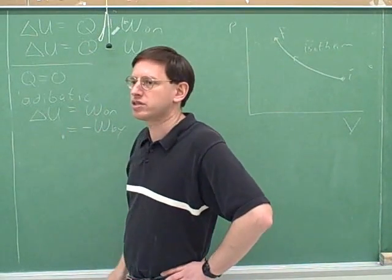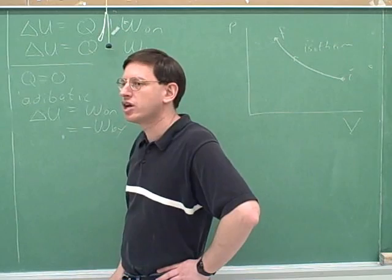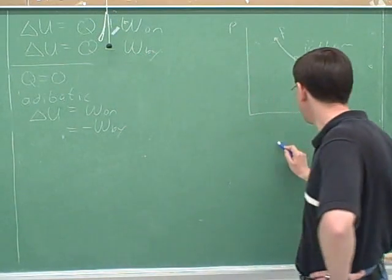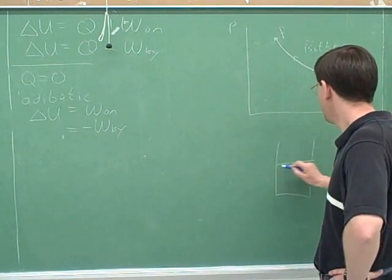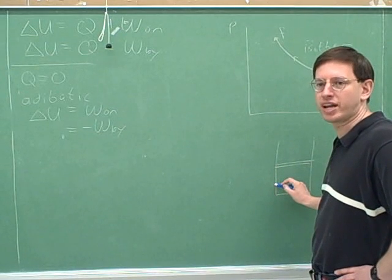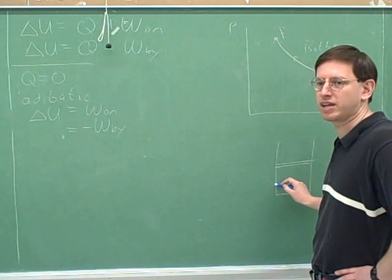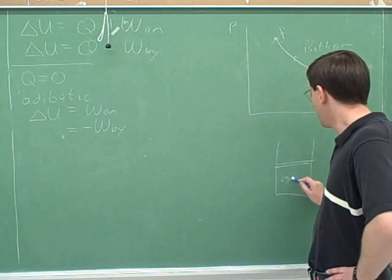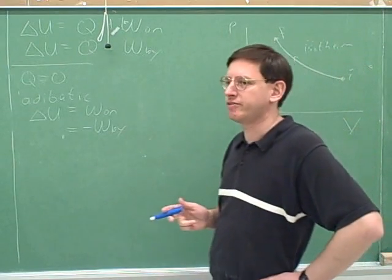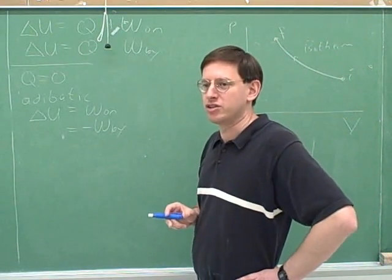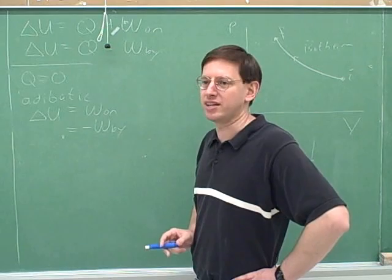Now, how would they signal in words when there's no heat exchange? Well, they have to do something to prevent heat from getting into or getting out of the gas. How do you prevent heat from getting into or out of your home? Insulation. So if they say that it's thermally insulated, that's done to keep it adiabatic.